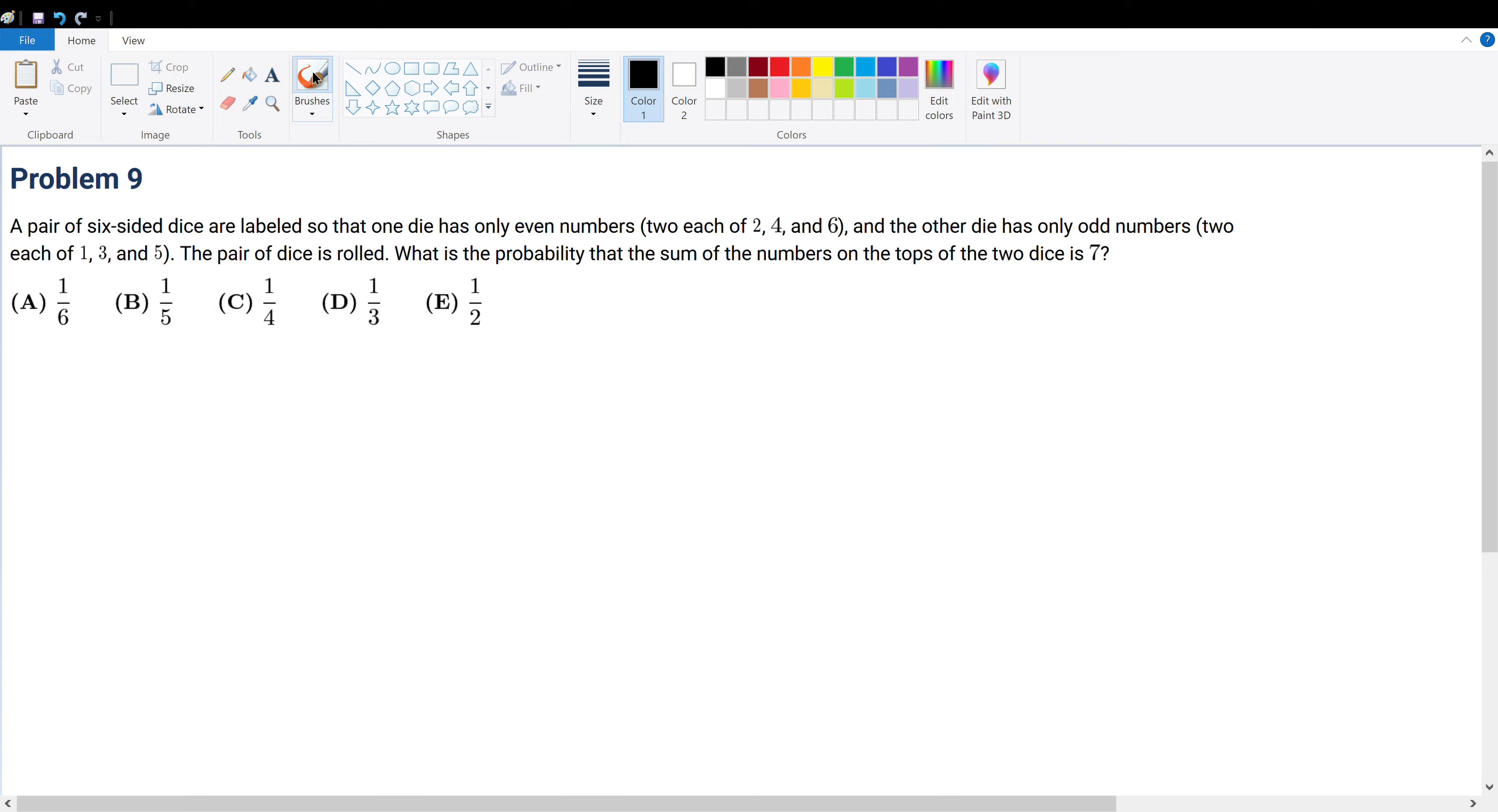Problem 9: A pair of six-sided dice are labeled so that one die has only even numbers, two of each. So we have two 2s, two 4s, and two 6s on die number one.